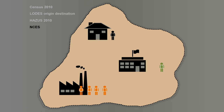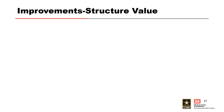When distributing population among multiple structures — for example, five residential structures with a hundred residential people — we use a weighting system. Depending on the types of structures, if it's multifamily versus single-family, the multifamily gets the lion's share of the residential population.